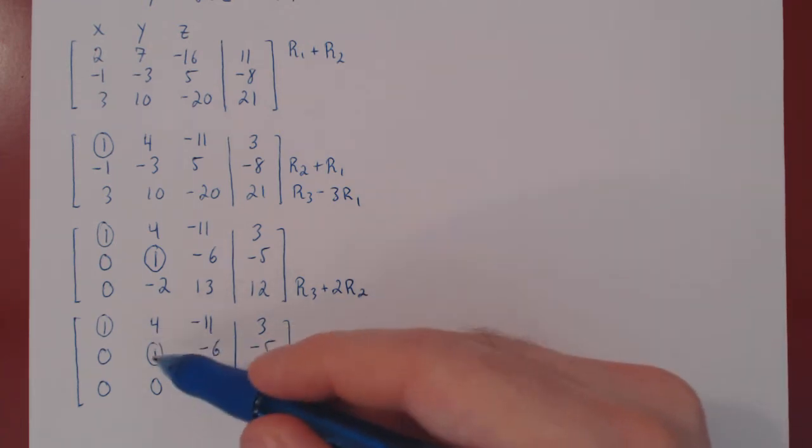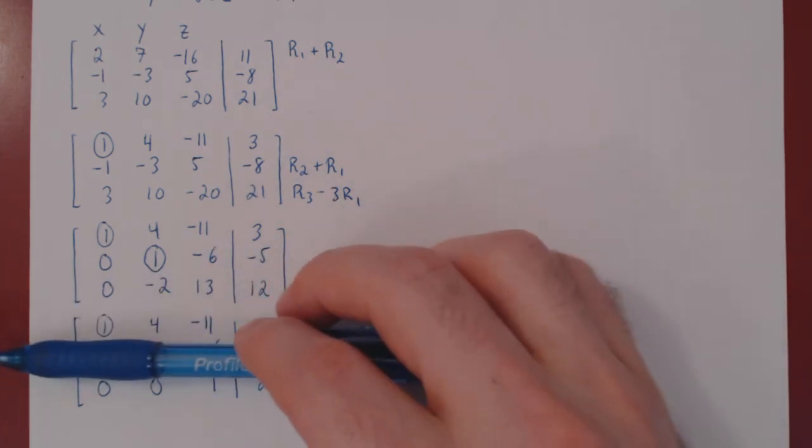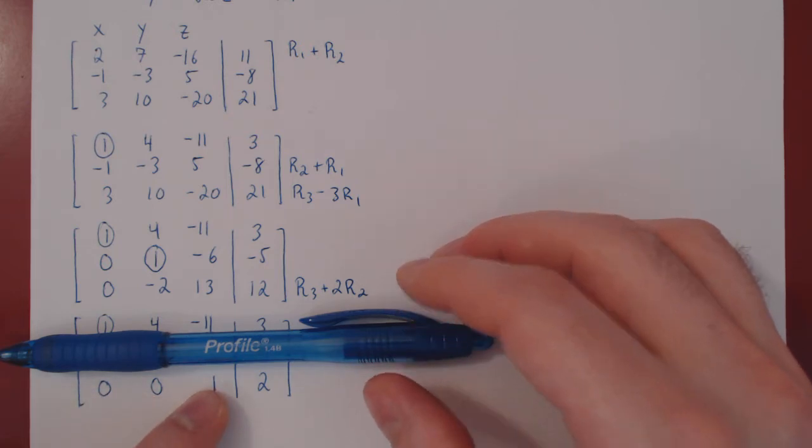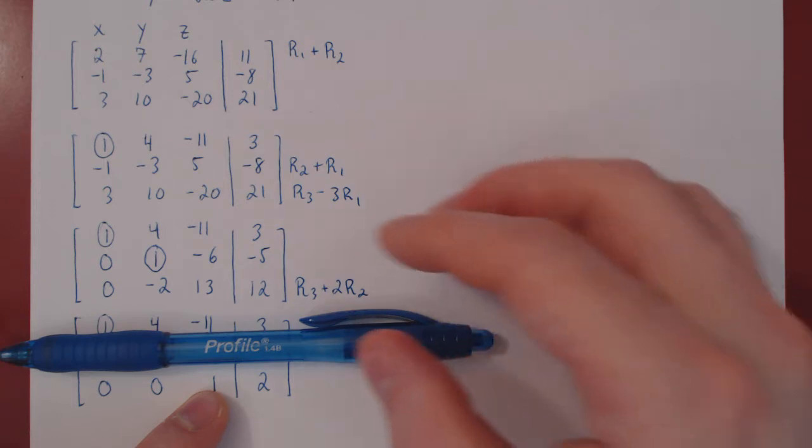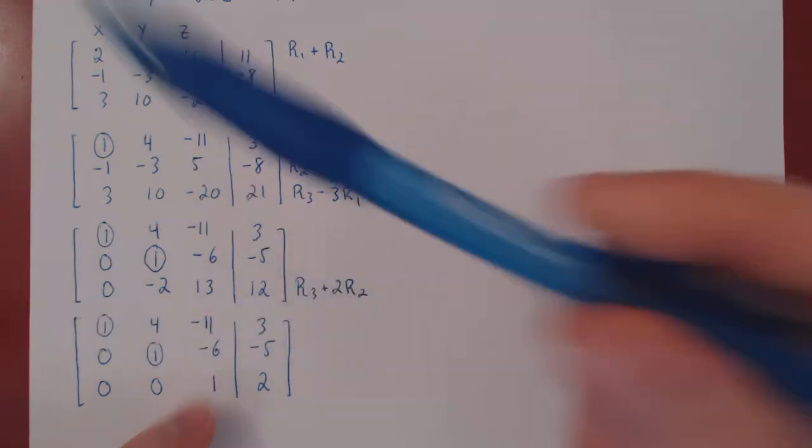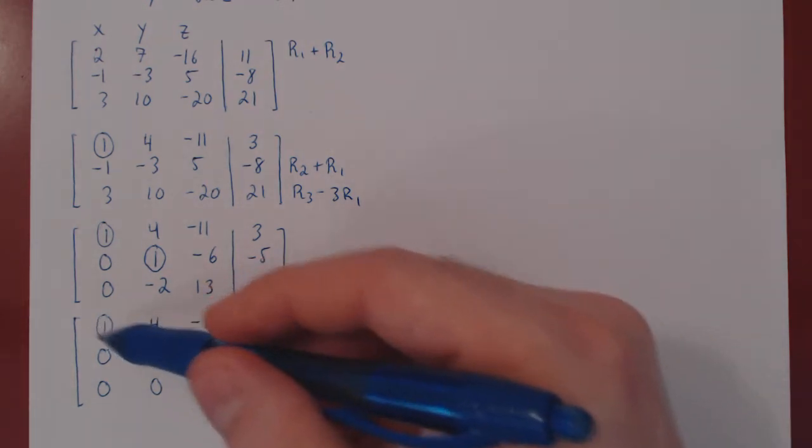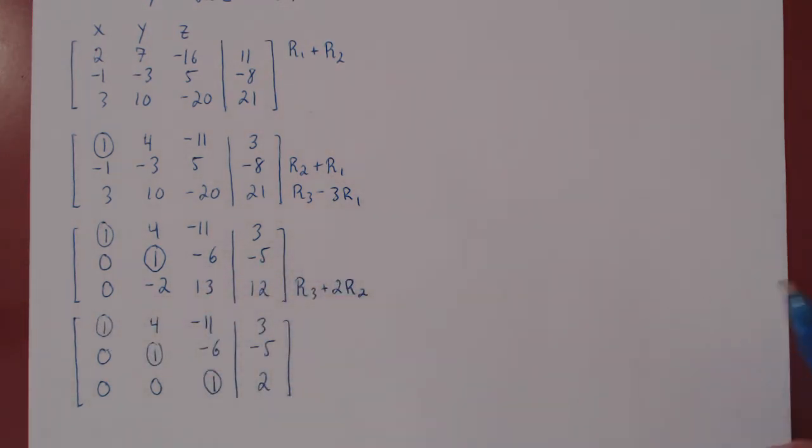So we have our second leading 1, we've killed the entries below it. And now again, we ignore this row and we repeat. We start with the leftmost column and we try to introduce a leading 1. Well, we can't here and here because both are 0, but here we can, and it already is a leading 1. And it already is in the top row, as there is only one row left over. And we kill all the entries below it, but there are none. Since we have reached the bottom row, this is the end of Gaussian elimination.